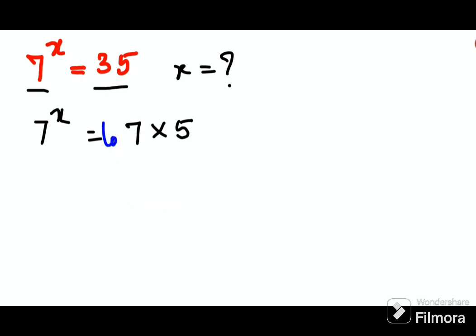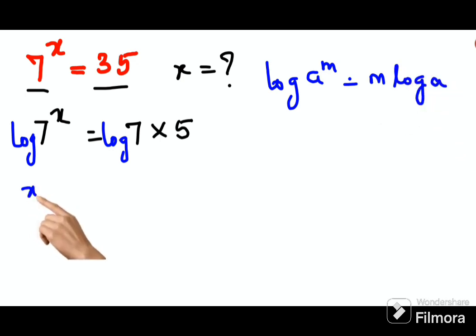We'll take log on both the sides. Now log of a raised to m equals m into log a. So here I can write this as x into log 7, and this...